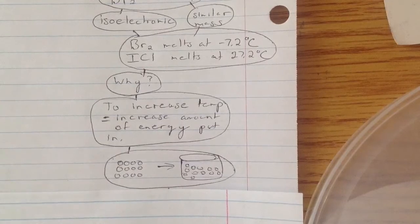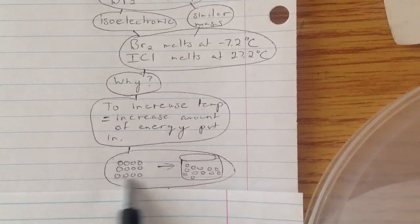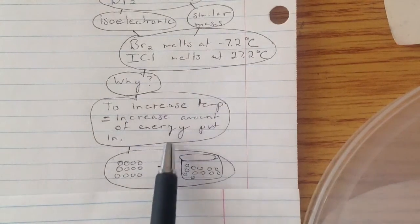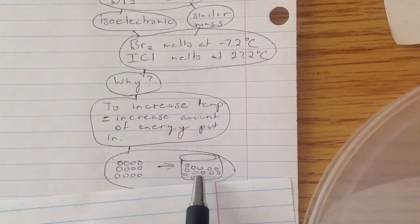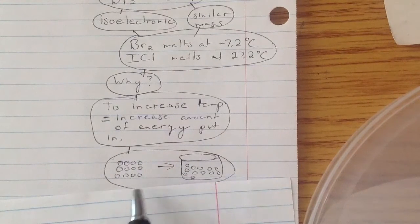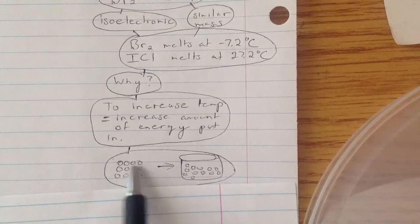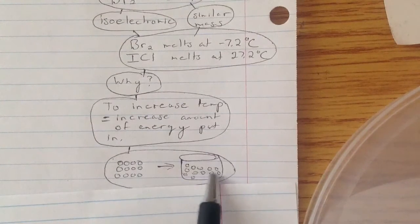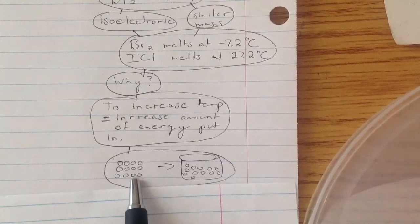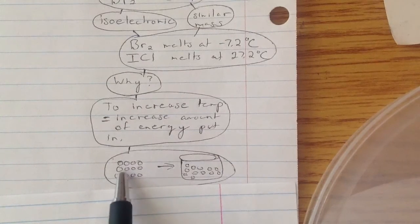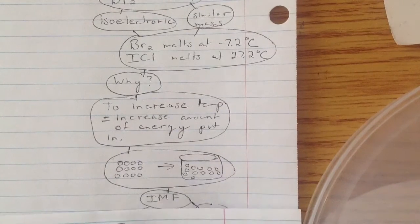First of all, you have to understand when it's melting, it's solid to liquid. But what does that truly mean? What is happening to make a solid go to a liquid? What's happening at the atomic level or molecular level? And that's where intermolecular forces come in.